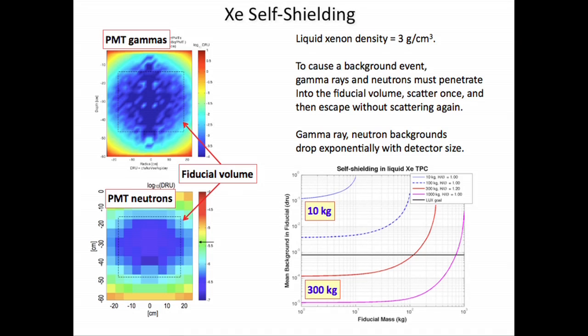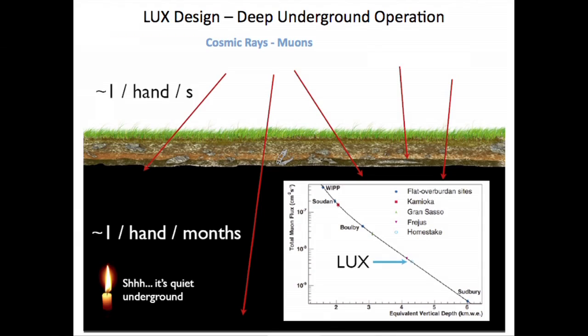We shield our detector with a big water tank and self-shield it with the liquid xenon, but it's also very important to go very deep underground. Cosmic rays bang into the upper atmosphere, making charged particles called muons that rip through us all the time. To get away from that kind of background, we have to go deep underground — the rock shields out those muons. About one muon per hand per second passes through you at the surface; if you go deep underground it's like one per hand per month. That allows a quiet environment to do these experiments.